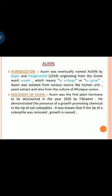Auxin was the first plant hormone to be discovered, in the year 1926, by F.W. Went. He demonstrated the presence of a growth-promoting chemical in the tip of the oat coleoptile. It was known that if the tip of the coleoptile was removed, growth ceased.